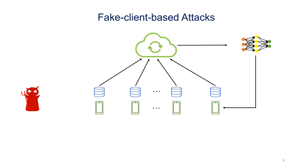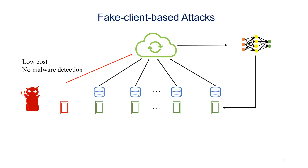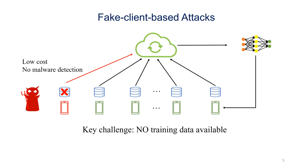We propose fake client-based attacks to address those limitations. Instead of compromising genuine clients in Federated Learning, the attacker injects some fake clients into the system. For instance, the attacker can use Android emulators to emulate some clients. This incurs much lower cost compared to compromising genuine clients. Moreover, since the attacker has full control over the fake clients, it can get rid of malware detection easily. However, there is a key challenge in fake client-based attacks: there is no training data available on the fake clients. Thus, existing attacks are not applicable to fake client-based scenarios, since they all require genuine training data.